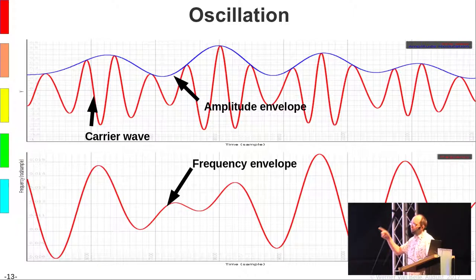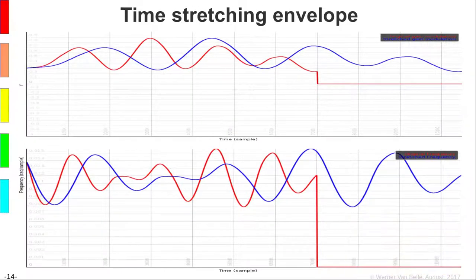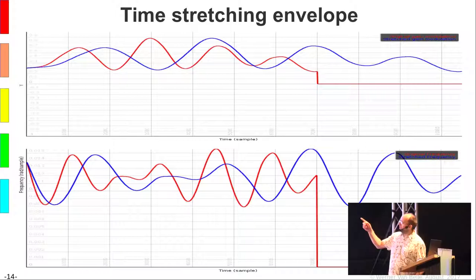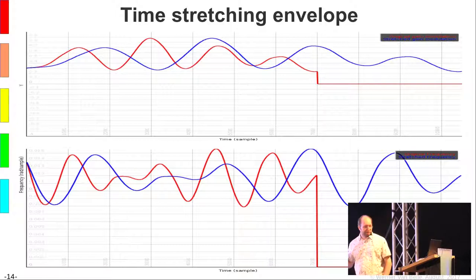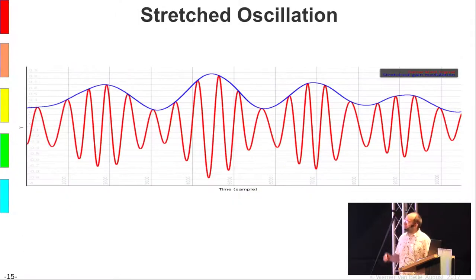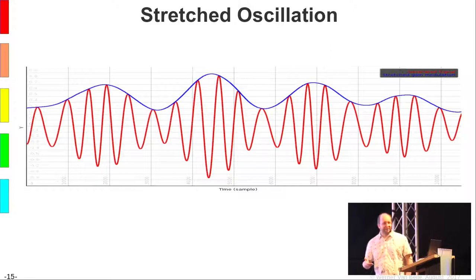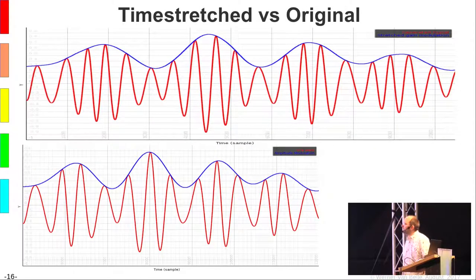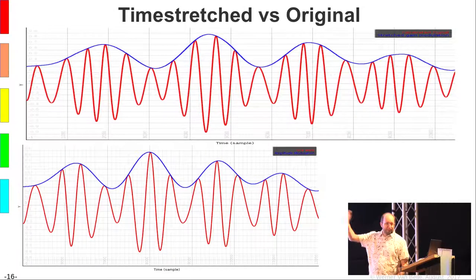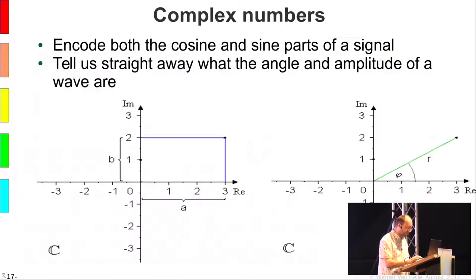If you consider a sound like this, you can time-stretch it by resampling the envelopes. The blue one is the resampled envelope of the red one. At the top you get the time-stretched amplitude envelope, at the bottom the time-stretched frequency envelope, and underneath these new stretched envelopes you recreate the original carrier wave. The top is the time-stretched version, the bottom is the original — it lasts longer, the envelope is preserved, and per time unit you have more or less the same number of oscillations.